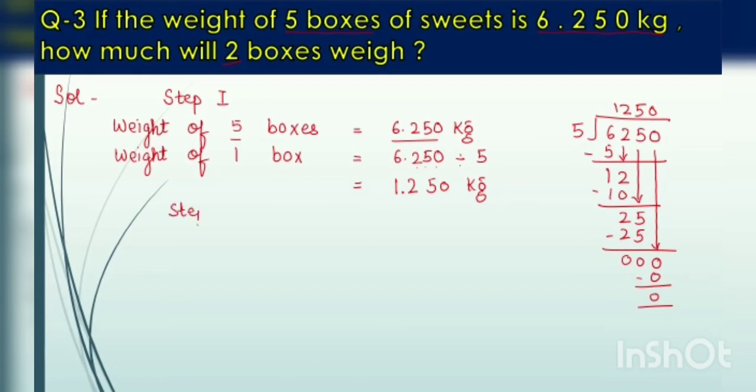Now the second step. Write down weight of 1 box is equal to 1.250 kg. Now you have to find out the weight of 2 boxes. So it is 1.250 multiplied by 2 kg. Don't forget to write down the unit.